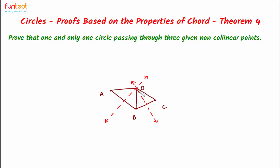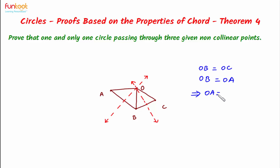From this property, we can see O lies on the perpendicular bisector of BC, so OB is equal to OC. Similarly, point O also lies on the perpendicular bisector of AB, so point O will be equidistant from B and A, meaning OB is also equal to OA. From these two equations it follows that OA = OB = OC. So with O as center and radius OA = OB = OC, we can definitely draw a circle passing through these three given non-collinear points A, B and C.